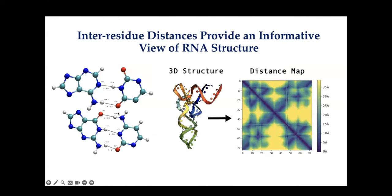We take an inter-residue distance view of the RNA structure. You can think of the RNA structure at a 3D level, but that's more difficult to predict using machine learning. So we look at a 2D view called a distance map — the pairwise distance between each of the residues in the 3D structure. This is an L by L distance map where each box represents the distance between two residues in your RNA structure.